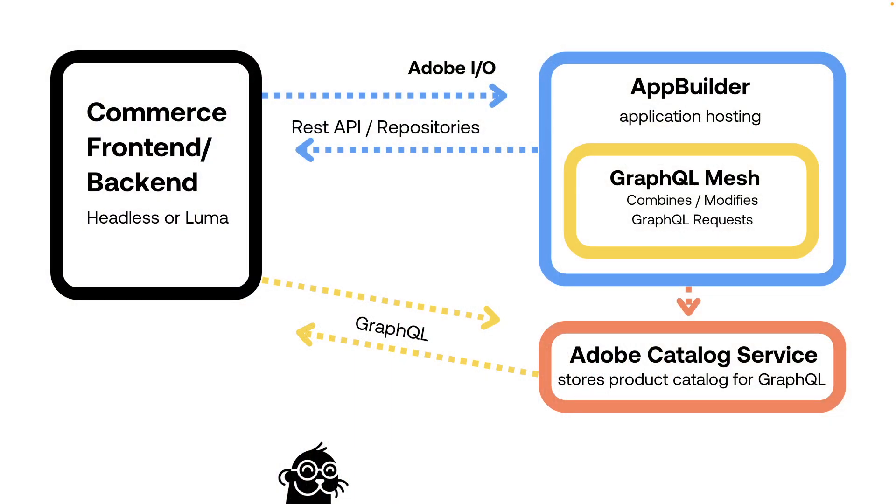The thing with App Builder is that it is a fully separate application. While Adobe I.O. connects to App Builder, and you can use the REST API and repositories to connect back to Commerce, App Builder represents a separate application or separate module. We've all heard the term microservices being thrown around, but this basically ends up being a firewall between Adobe Commerce and whatever customization or custom background logic that needs to happen.